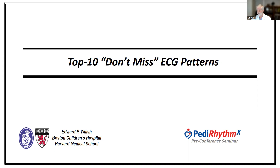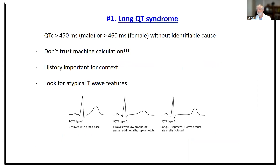Top of the list, number one: Long QT Syndrome. The accepted definitions are a QTc greater than 450 in a male or greater than 460 in a female without identifiable cause. That qualifier — identifiable cause — is important because history is critical when evaluating QT intervals. You need to know if the patient is on a medication affecting repolarization, has electrolyte disturbances, or other cardiac comorbidities that could affect the QT and T wave.